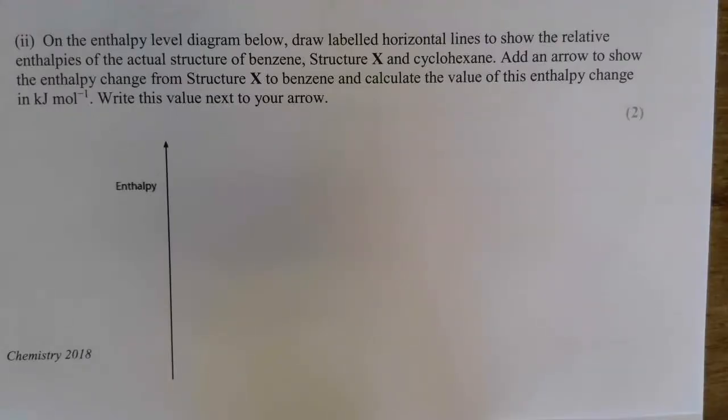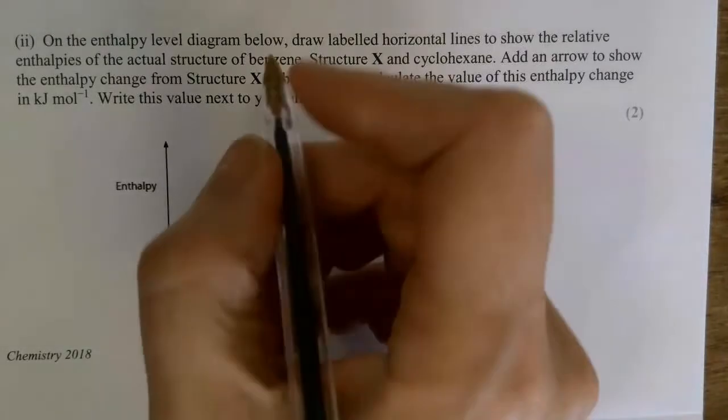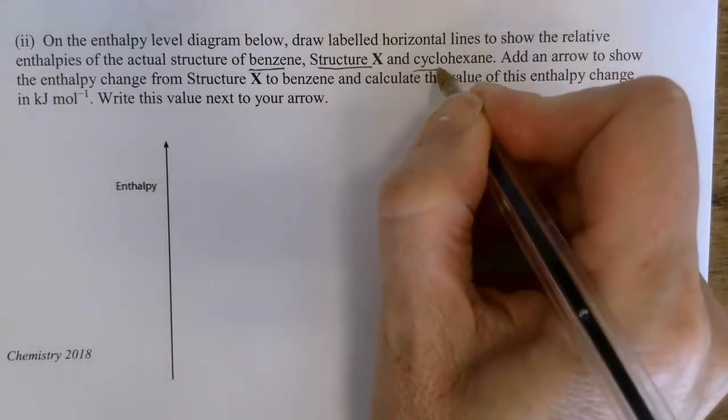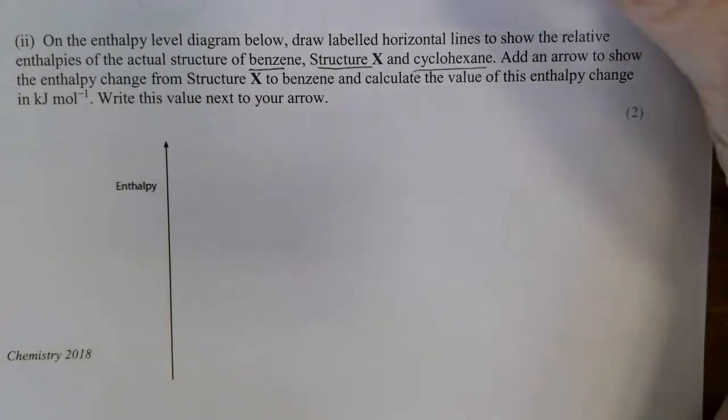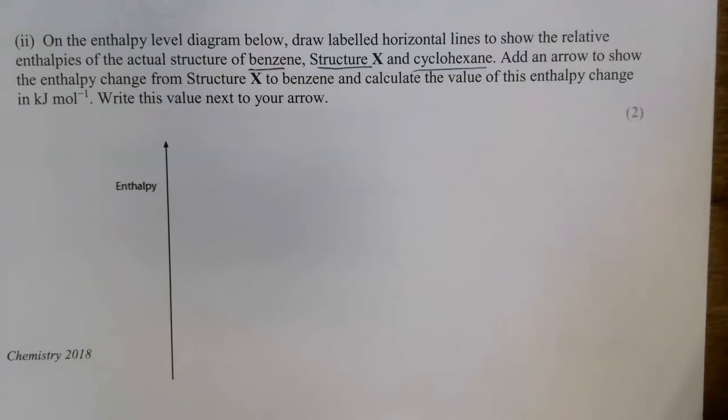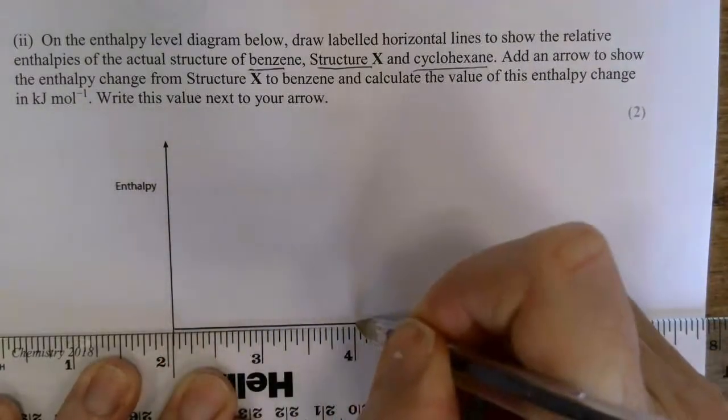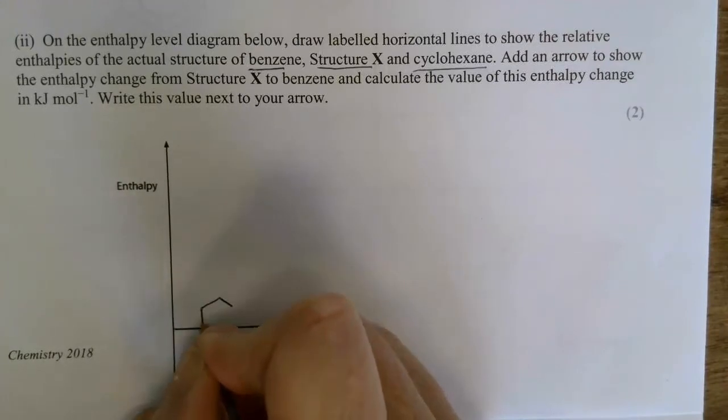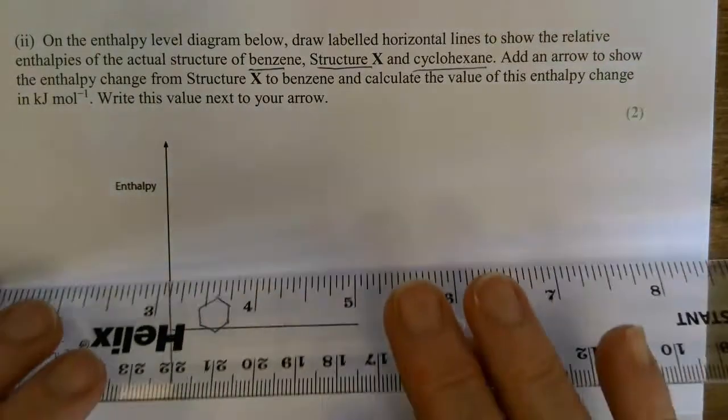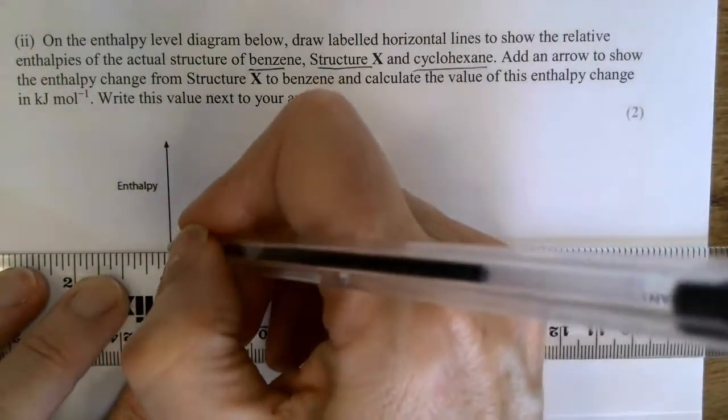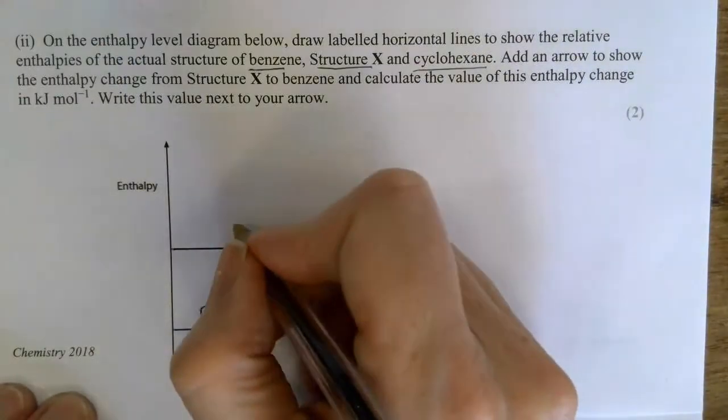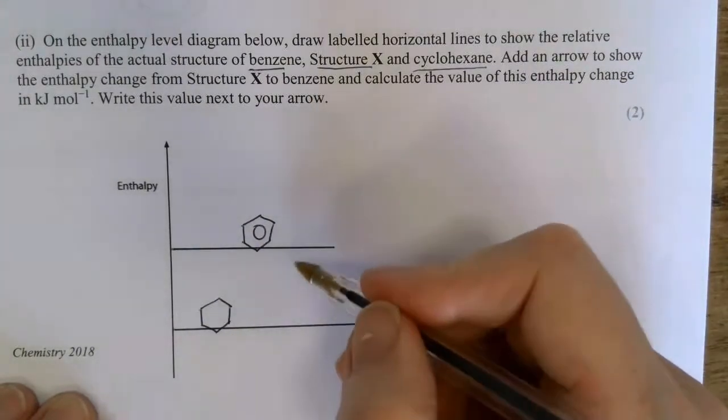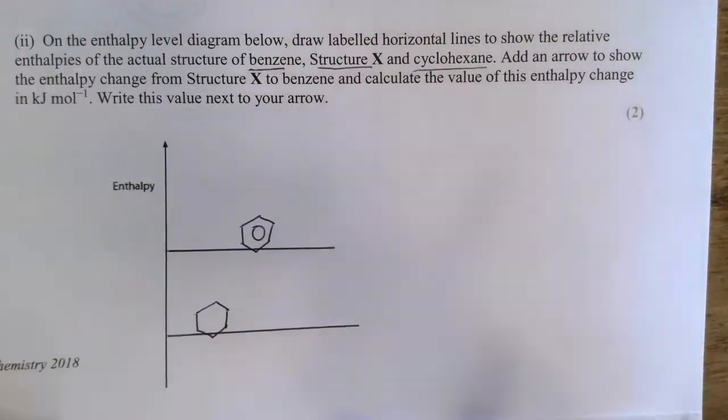Now this last part of the question did confuse a lot of people, so you need to be clear about what they're asking you to do. It's showing the relative enthalpies of the structures of benzene, structure X and cyclohexane. We know that benzene to cyclohexane is exothermic, so that means cyclohexane is more stable, has a lower enthalpy than the benzene structure. So I'm going to draw a line to represent my cyclohexane, and if I take my next line up, that's benzene, and I know that that enthalpy change is minus 205.